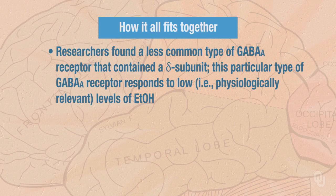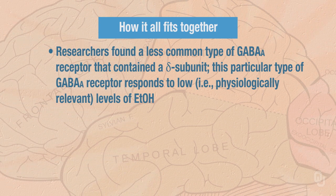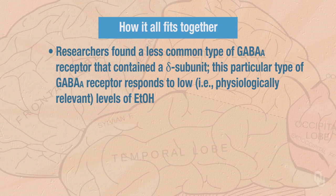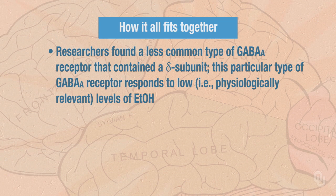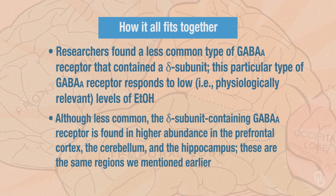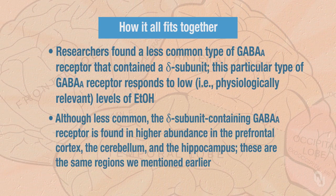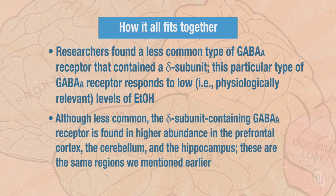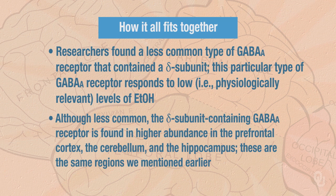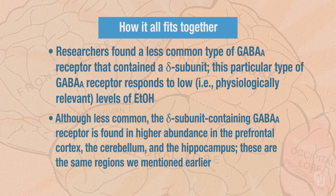So how does it all tie together? Researchers found a less common type of GABA-A receptor that contained a delta subunit. This particular type of GABA-A receptor responds to low, or physiologically relevant, levels of ethanol — something that hadn't been found previously. And although this is less common, the delta subunit-containing GABA-A receptor is found in higher abundance in the prefrontal cortex, the cerebellum, and the hippocampus — the same regions that we mentioned earlier.